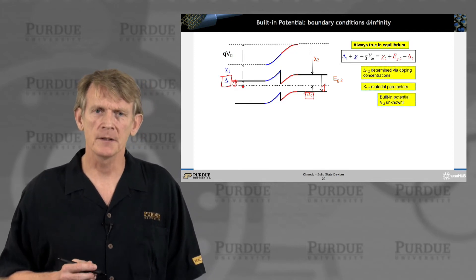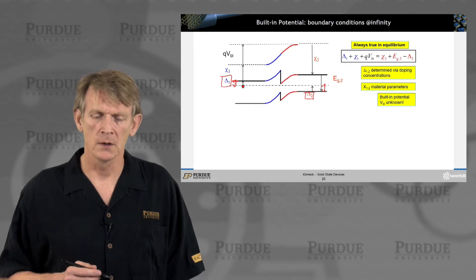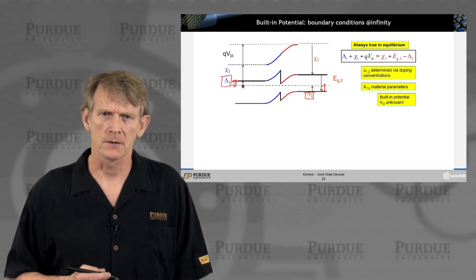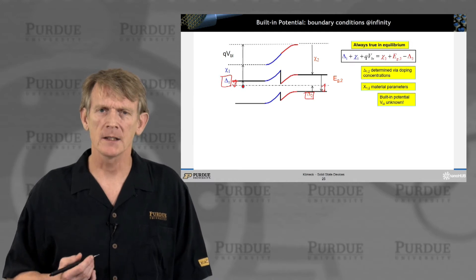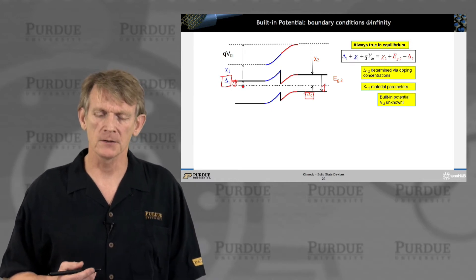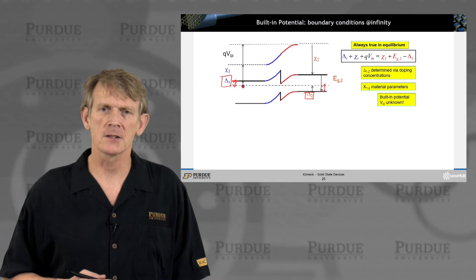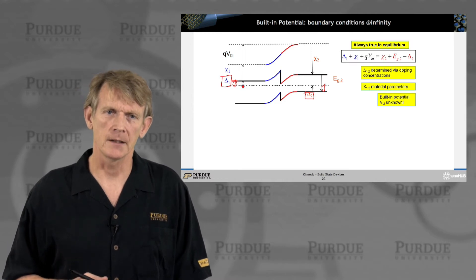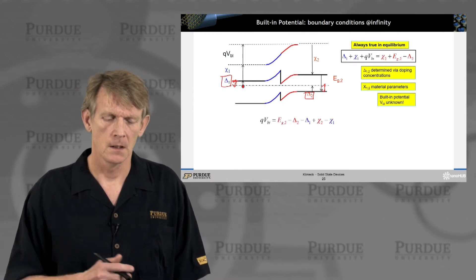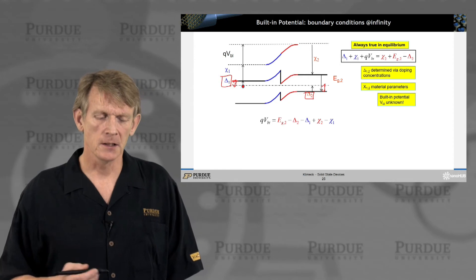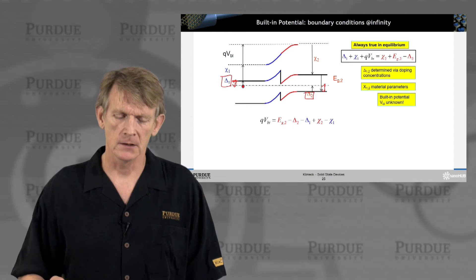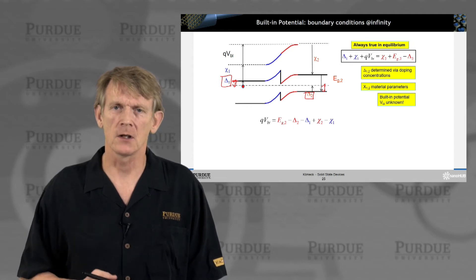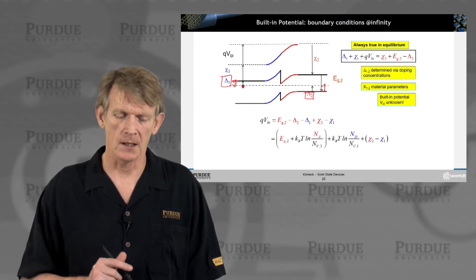This loop in energy from delta 1 plus chi1 plus some built-in potential equals the energy of chi2, the gap, and then delta 2. So this built-in potential balances out the complete closed-loop energy in the system. The point is you need to find a way to put an energy scale that is true for the left and the right side of the semiconductor in perfect equilibrium.